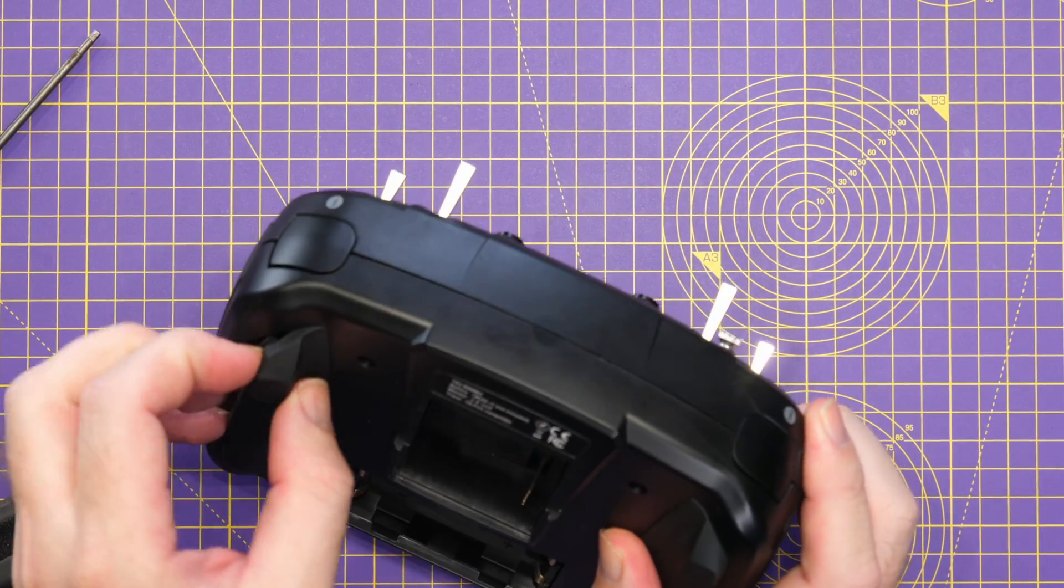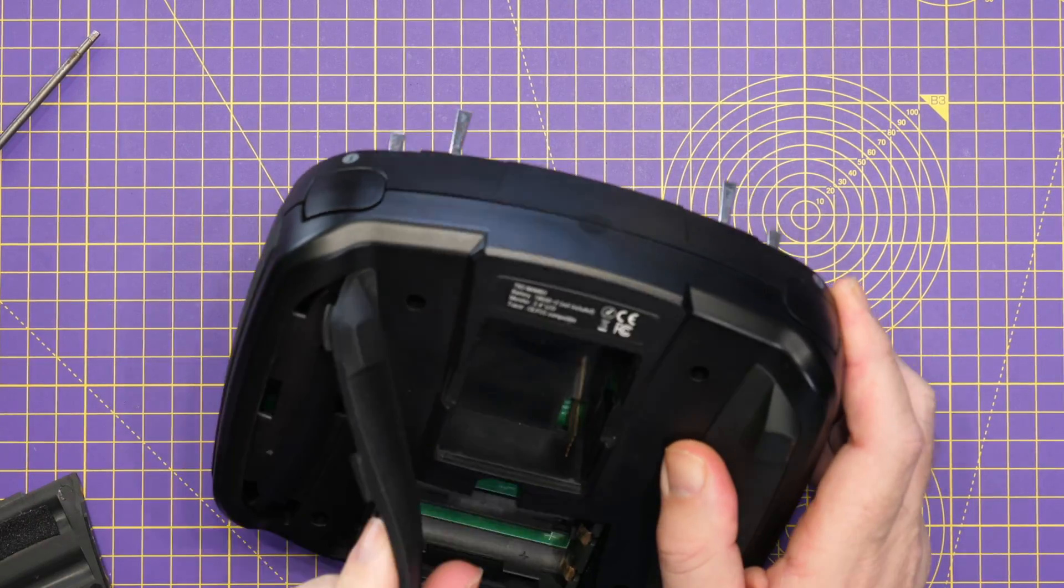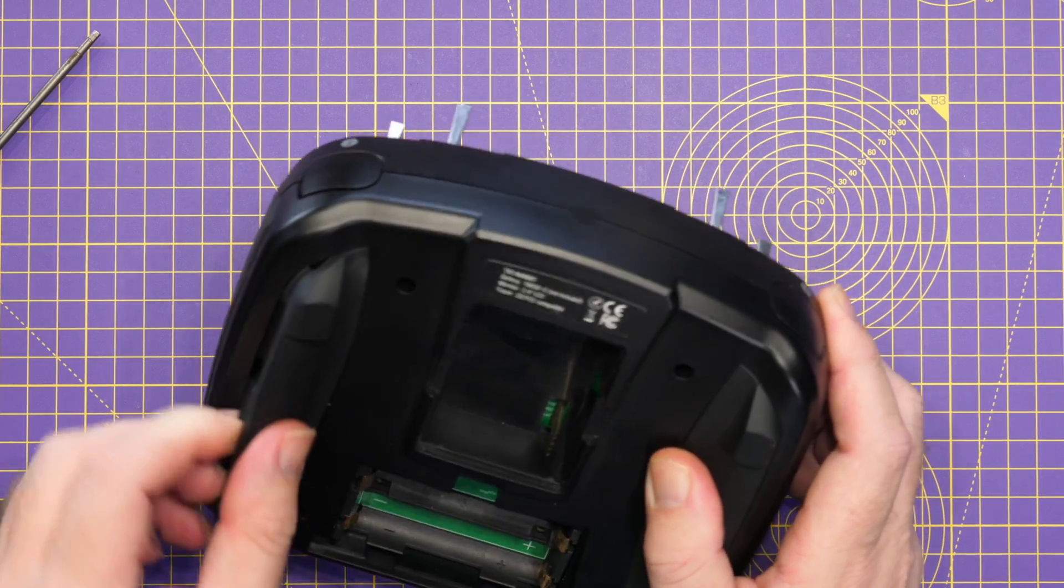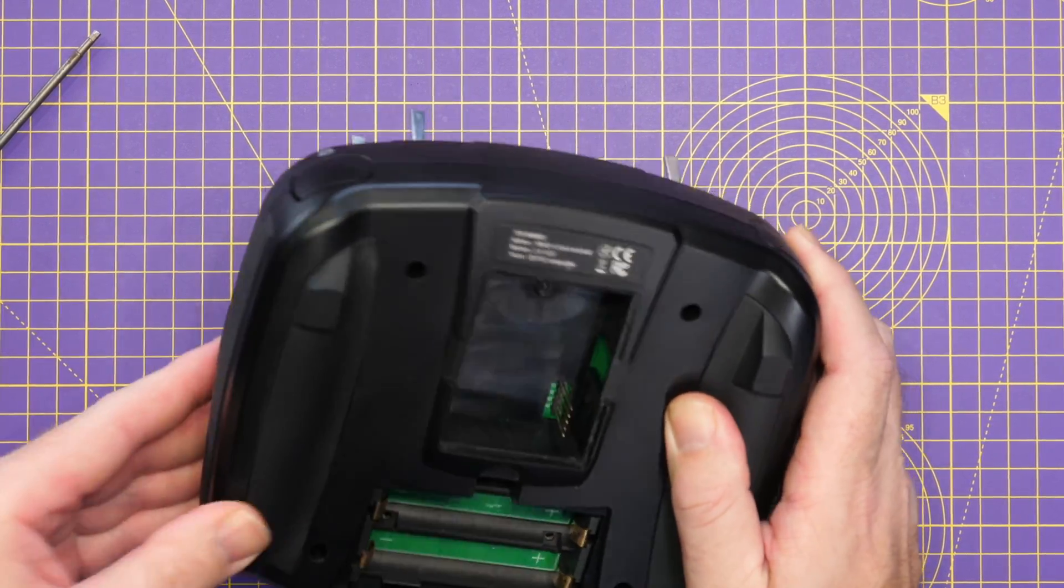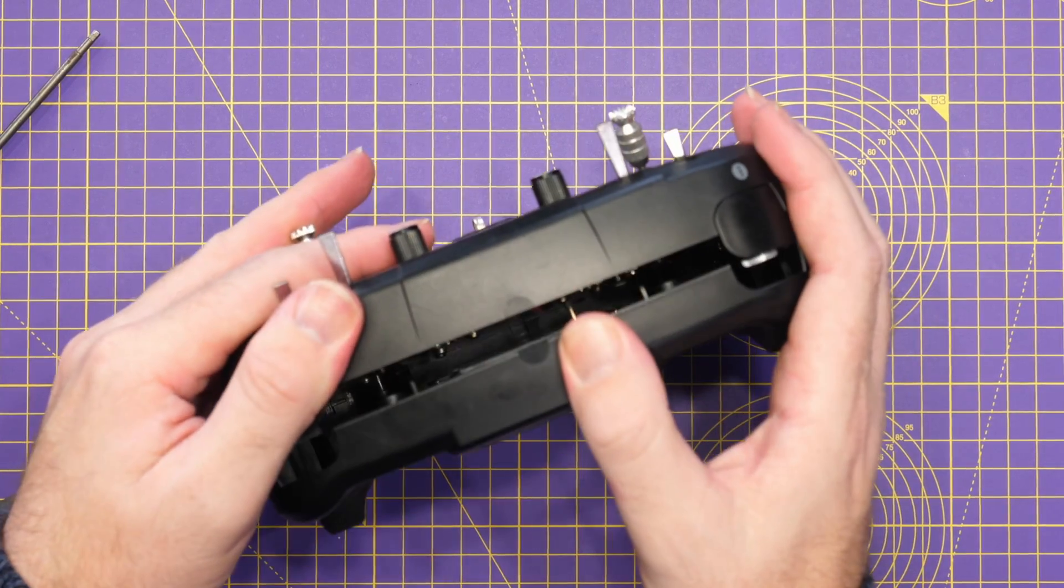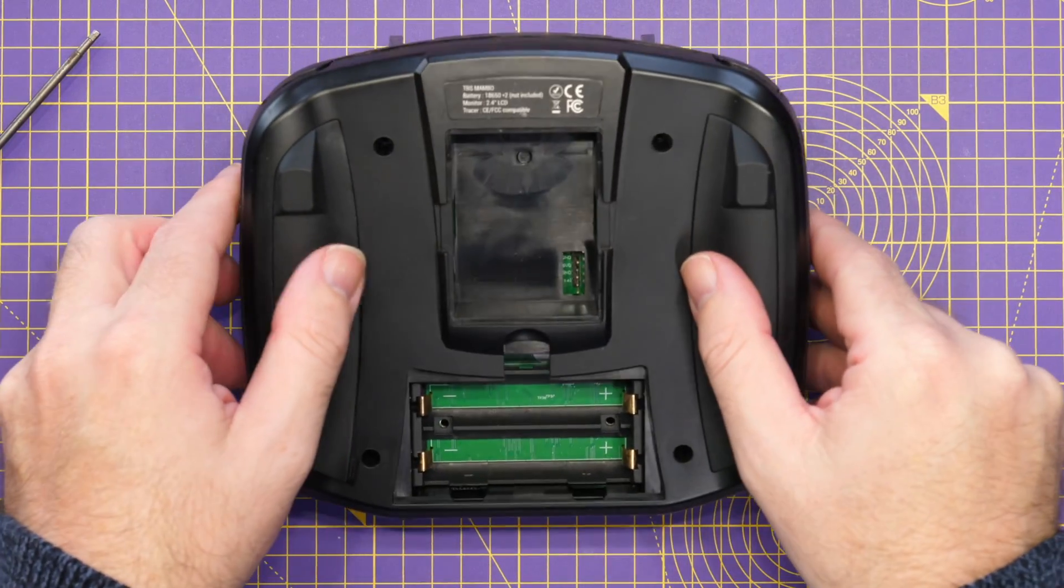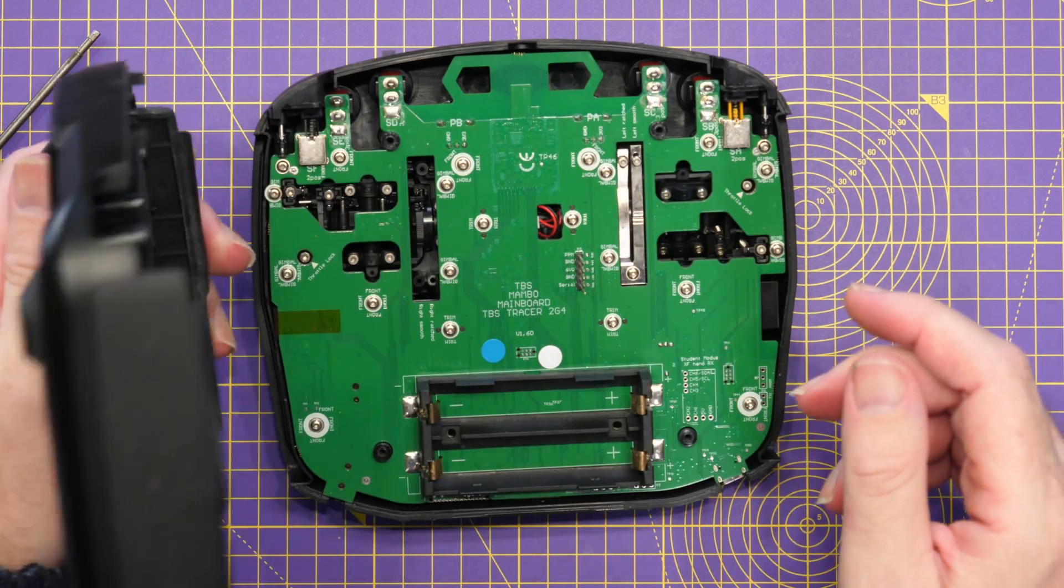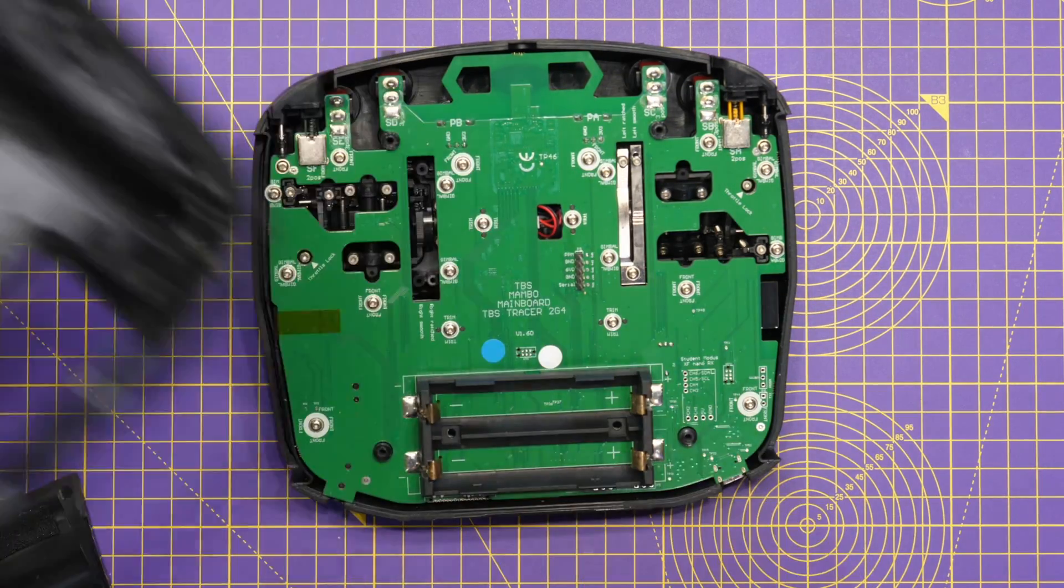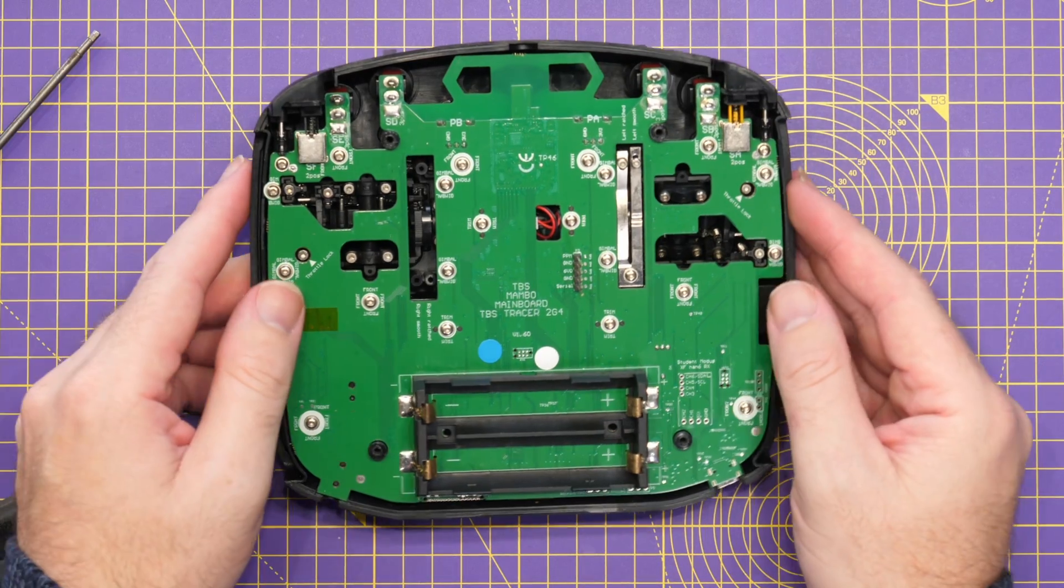I can't recall if there's anything under these. No it doesn't look to be. So we'll just pop that back on. I don't think is that. Ah there we go. So it's just the four. We can then lift the shell off. No wires on the back. Nicely done TBS. It's been a while since I stripped this radio down if I'm honest.